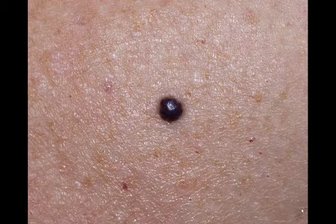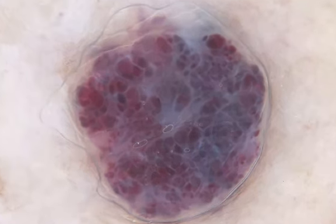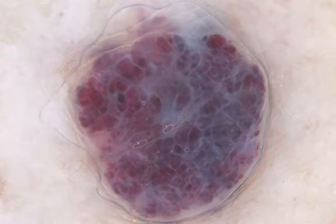a lesion viewed clinically. Then with dermatoscopy, which pattern? Well, the structure is clots, so we have a pattern of clots. Which color? Red and purple, so you know the diagnosis. It's an angioma.